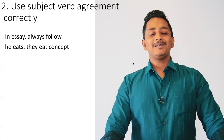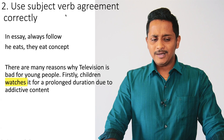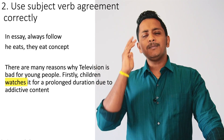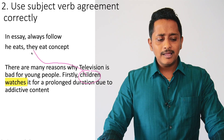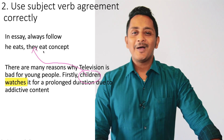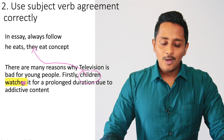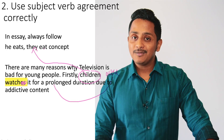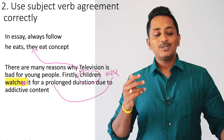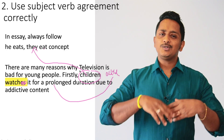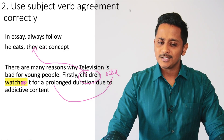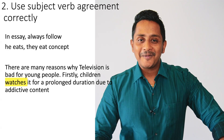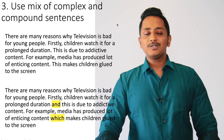Avoiding subject-verb agreement mistakes will improve your scores. For example: 'Children watches' is wrong — children is plural, like 'they,' so it should be 'children watch.' If you write 'a child,' then it becomes 'watches.' These simple errors can keep your score stuck at 5.5 or 6. This concept applies in speaking as well.